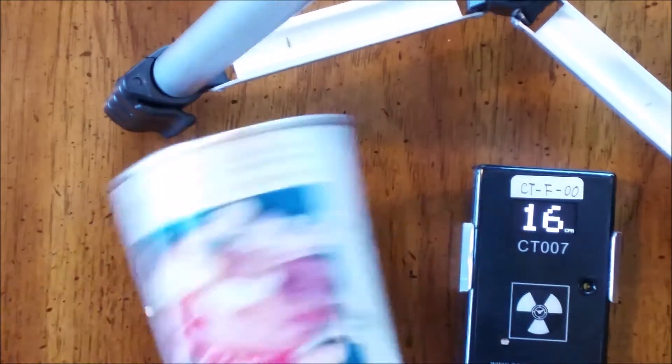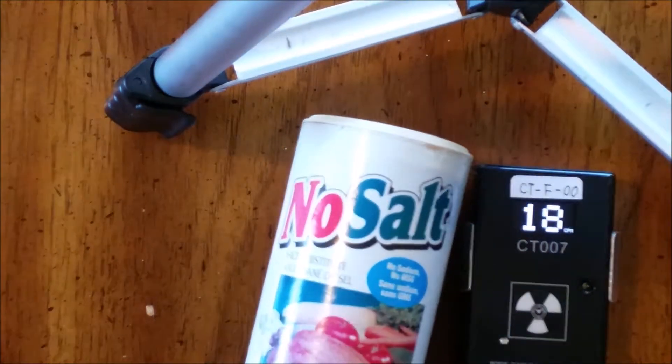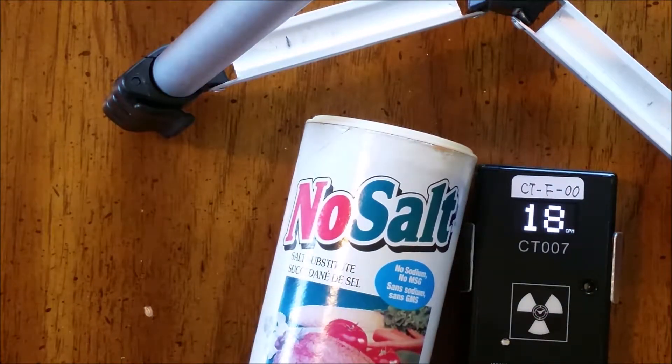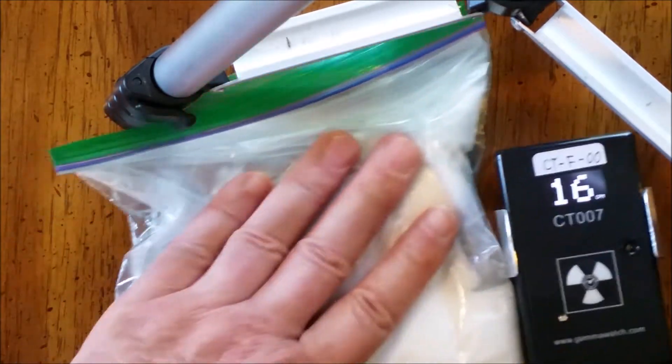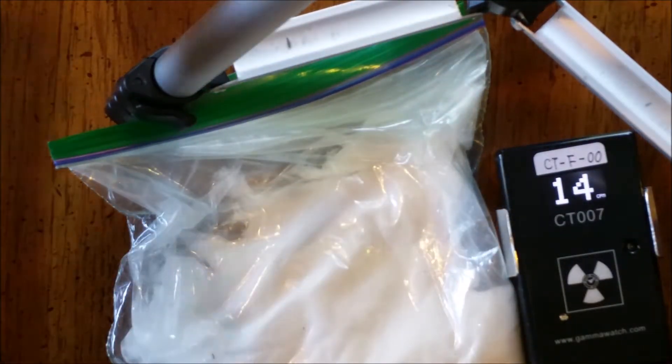Probably the easiest radioactive material to get is no salt salt substitute. You can get it at any grocery store. That's what's in this bag.